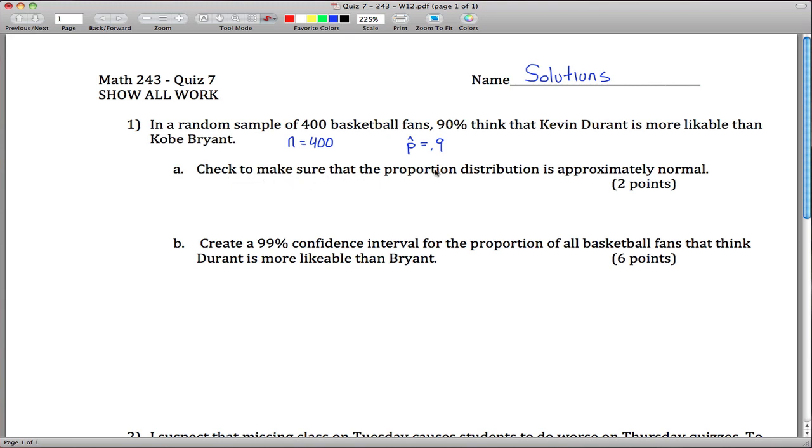I think that Kevin Durant is more likable than Kobe Bryant. Check to make sure that the population distribution is approximately normal. So there is a criteria for proportions: we need n times p times 1 minus p to be greater than or equal to 10. We don't know p, but we do know p-hat is 0.9, so we can use that as an estimate for p.